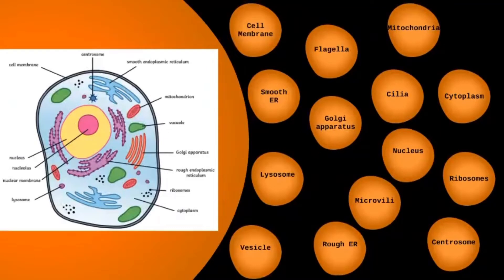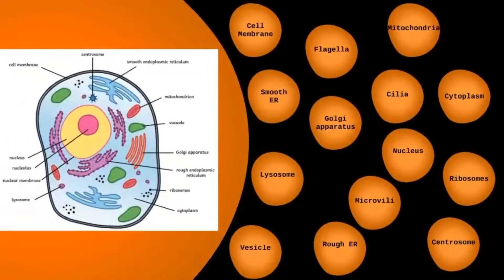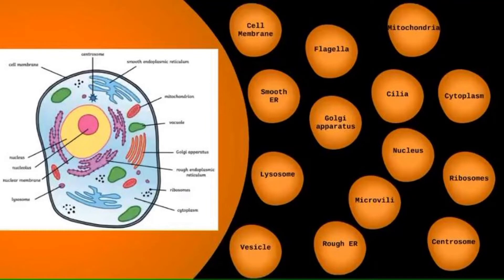The cytoplasm is everything within the cell that isn't an organelle — it's a fluid-like substance mainly made up of water but also containing other substances. It keeps the cell plump, allows the cell to maintain its shape and form, and contains a large network of cytoskeletal filaments including microtubules, which we'll go on to later in this lesson and also when we talk about cell division.